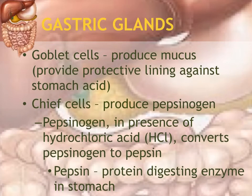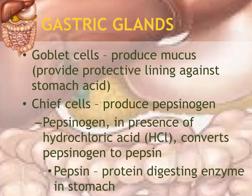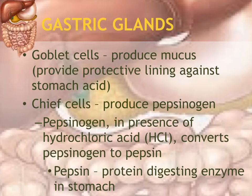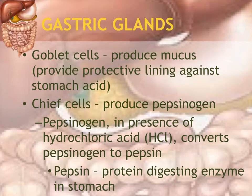Gastric glands are glands in the stomach — the word gastric always refers to the stomach. Goblet cells produce mucus that not only lubricates but also coats the stomach wall and protects it against stomach acid, which has a pH of 2. If that mucus lining erodes, it causes ulcers. Chief cells produce pepsinogen, which combines with hydrochloric acid in the stomach to become pepsin — the enzyme that breaks down protein in the stomach.